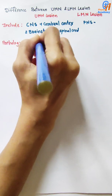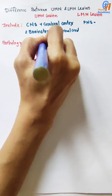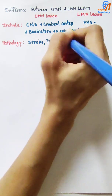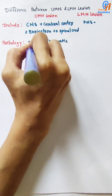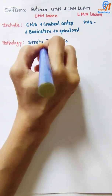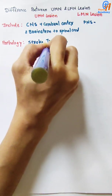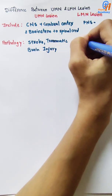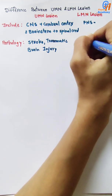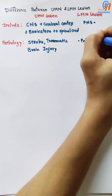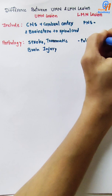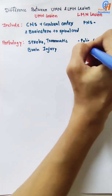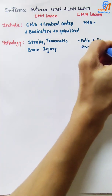The first example of a UMN lesion is stroke and traumatic brain injury. Examples of lower motor neuron lesions include polio, GBS, and peripheral nerve injury.